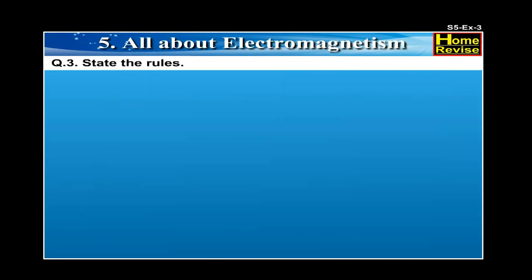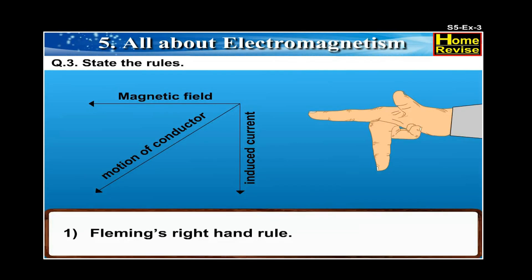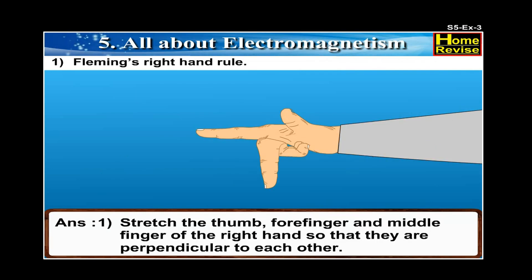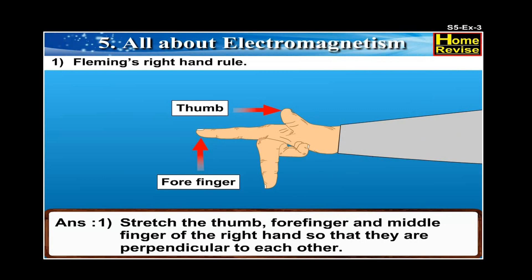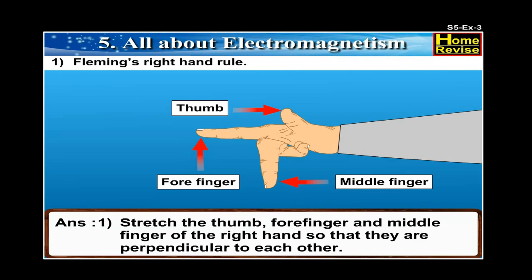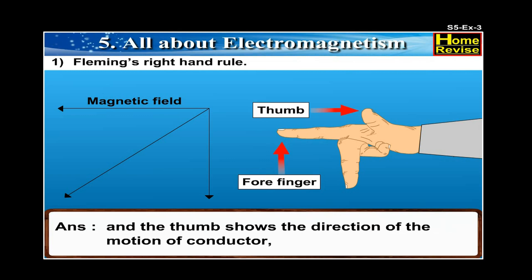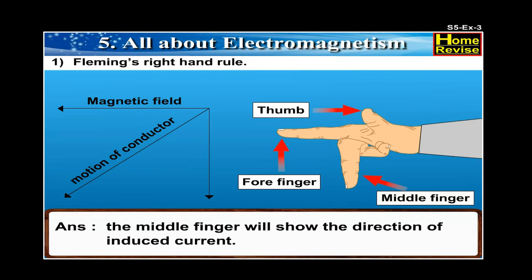Question 3. State the rules. 1. Fleming's right hand rule. Answer: Stretch the thumb, forefinger and middle finger of the right hand so that they are perpendicular to each other. It states that if the forefinger indicates the direction of the magnetic field and the thumb shows the direction of motion of the conductor, the middle finger will show the direction of induced current.